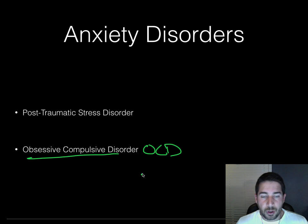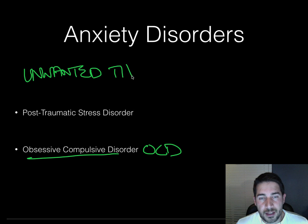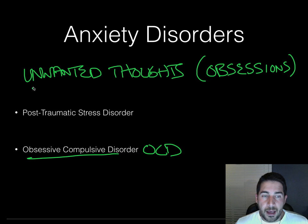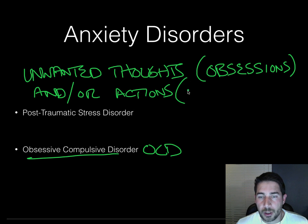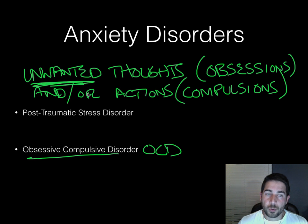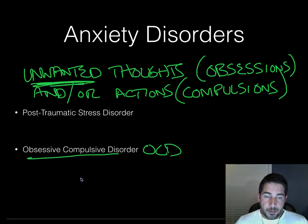OCD — obsessive compulsive disorder — is when we have unwanted thoughts, which are obsessions, or unwanted actions, which are compulsions. If you have these unwanted thoughts and unwanted actions, this can develop into obsessive compulsive disorder. The key here is that they are unwanted. You don't want this. Anxiety is something you do not want, and any disorder is unwanted. These compulsions can manifest themselves in a number of different ways — there are about four major categories.